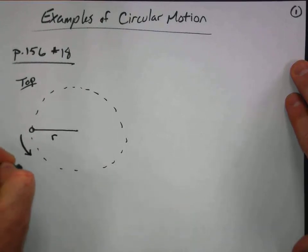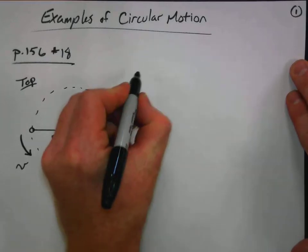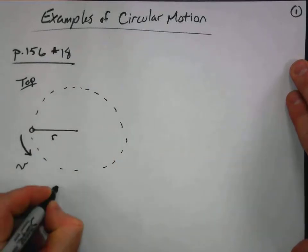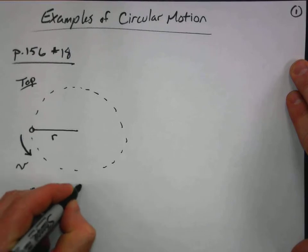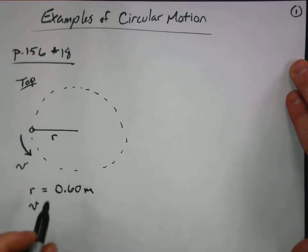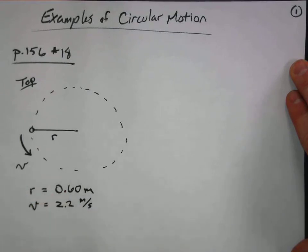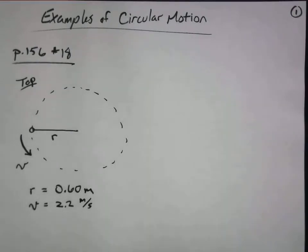We're given some information about this object. We're told that the radius of the circle is 0.6 meters — the radius is the length to the center. We're also told there is a velocity, and we're dealing with uniform circular motion. The speed will remain constant at 2.2 meters per second. The velocity, however, is not constant — the direction is constantly changing.